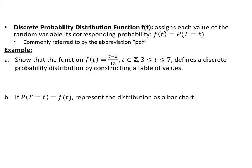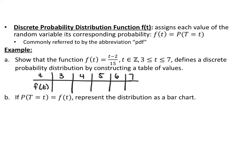For this first example, they give us the probability distribution function f(t) = (t − 2)/15, where t is an integer between 3 and 7 inclusive. We want to show that this defines a discrete probability distribution by constructing a table of values. We're going to fill out a table with t values 3, 4, 5, 6, 7, and find f(t).